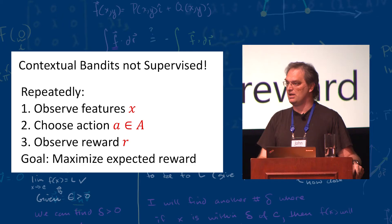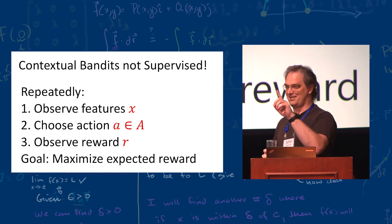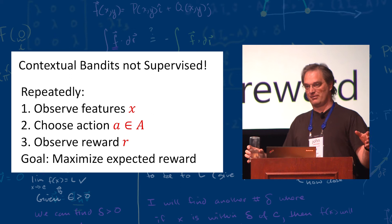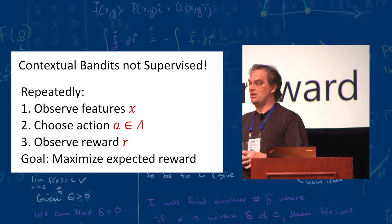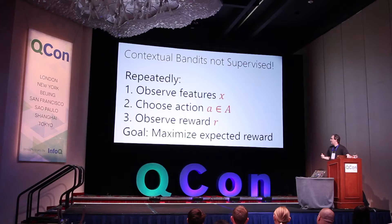In reinforcement learning — AlphaGo, Atari, playing games — there's a lot you can do with a simulator. The problem with applying reinforcement learning in the real world is that the number of samples you need to actually learn tends to be extremely high. Making things simpler is critical to having success.